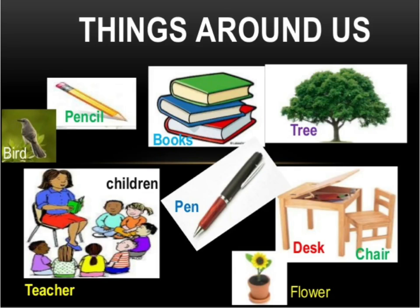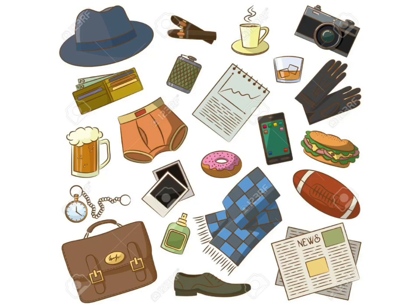Dear students, there are a number of different things around us — trees, cows, horses, sparrows, crows, insects, people, chairs, tables, rocks, stones, soil, water, air, mushrooms, eggs, cars, buses, clouds, plastic bottles, and televisions are some of the things which we find around us.